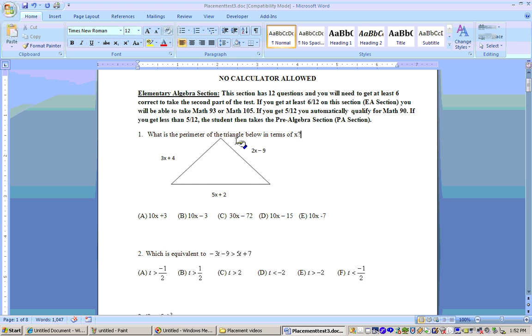The first one says, what is the perimeter of the triangle below in terms of x? Perimeter means to add up the lengths of all these sides. The lengths of these sides aren't numbers, they're expressions: 2x minus 9, 5x plus 2, and 3x plus 4. Adding up the like terms, the 2x, 5x, and 3x gives us 10x. Adding the numbers, 4 and 2 is 6, and 6 minus 9 is negative 3. So we get 10x minus 3, and the right answer is B.